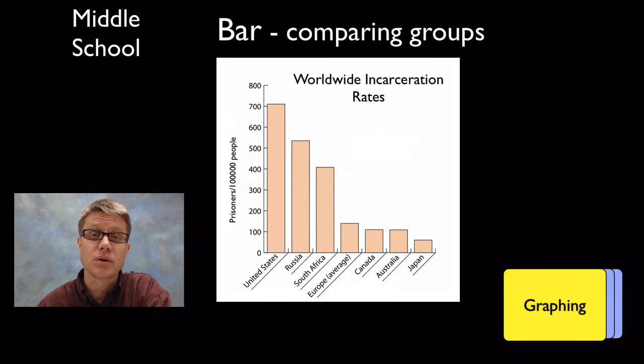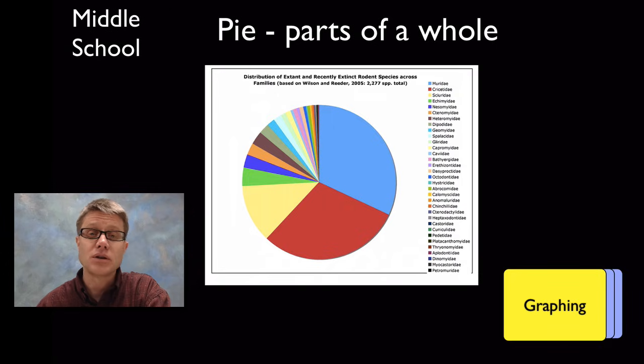We would use a bar graph if we're comparing different groups, and then we'd use a pie graph if we're looking at parts of the whole. You could present your students with data and first of all have them figure out what kind of a graph am I going to use.